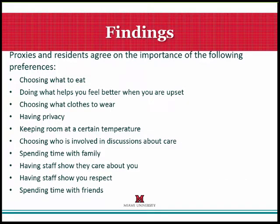The findings from that study showed the agreement between residents who could speak for themselves and their family member or friend. There were areas of very good agreement in terms of what the resident said they preferred and what the family member or friend reported. Some nice examples include eating, how the resident feels better when upset, what clothes they want to wear, and privacy. These are all things that we can reliably take from a proxy and care plan around these types of preferences.